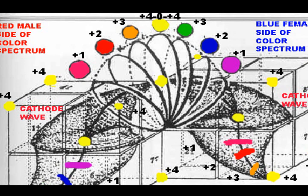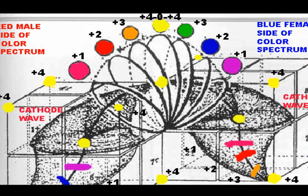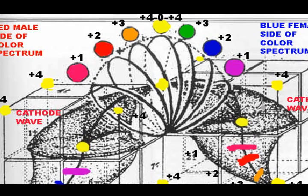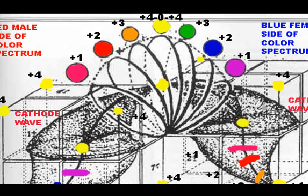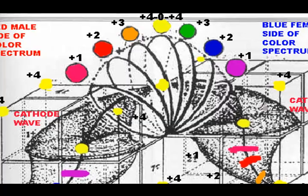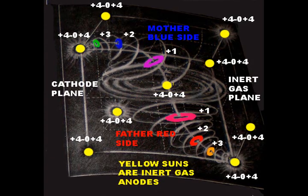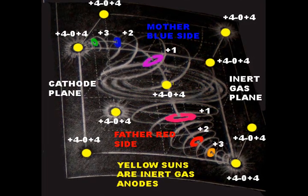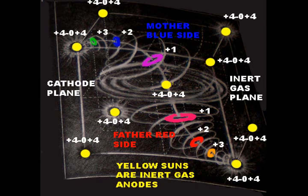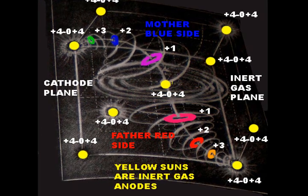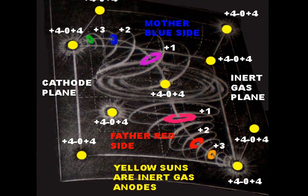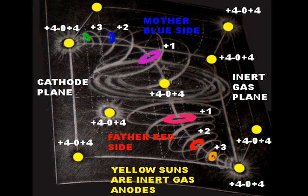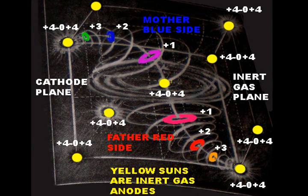The wave amplitude is a shared locking position marked plus four, zero, plus four — four male and four female vortices — creating an anode-cathode sphere with male in one hemisphere and female in the other hemisphere, divided by an equatorial inert gas cathode plane of stillness.